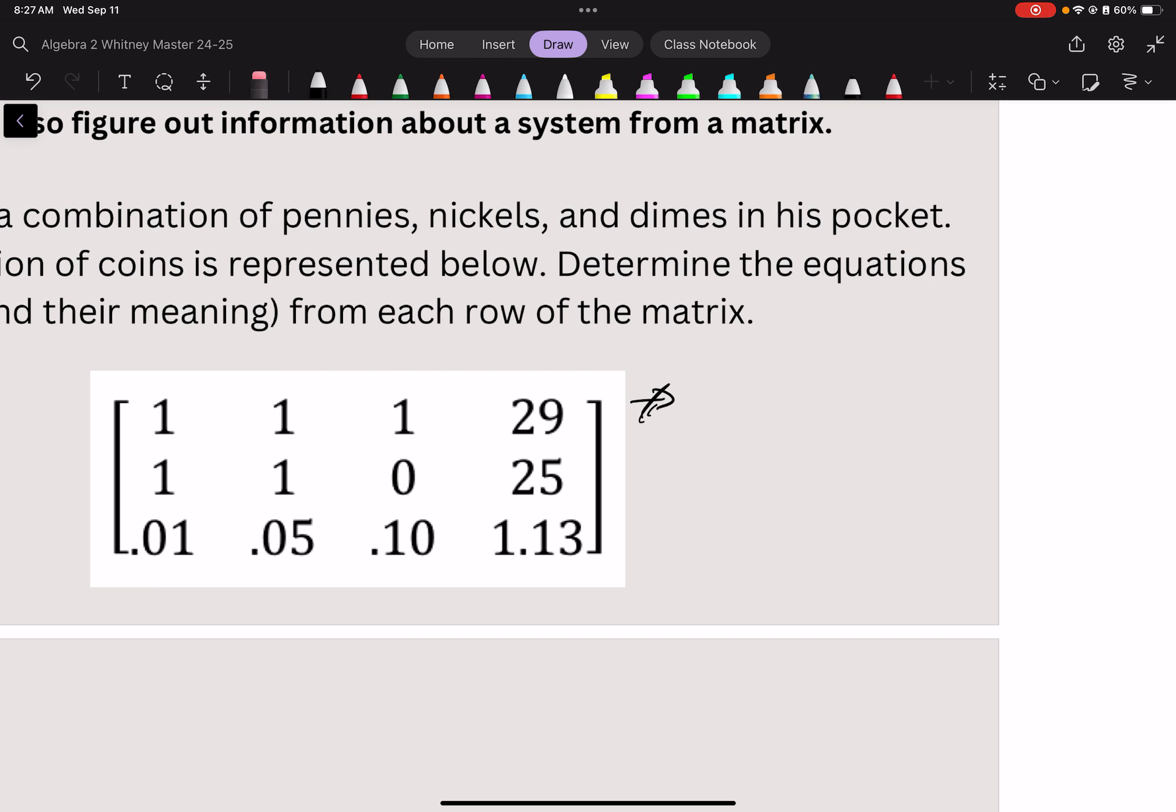Now, this last one looks like decimals. So, which one is worth 1 cent? Well, pennies. Which one's worth 5 cents? Well, nickels. And which one's worth 10 cents? Well, dimes.